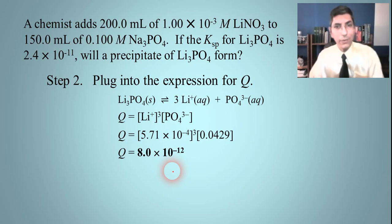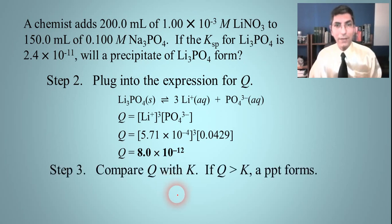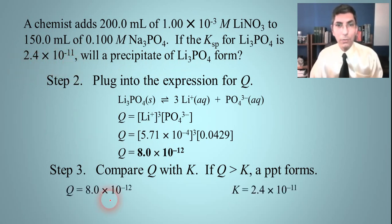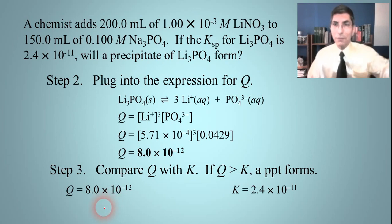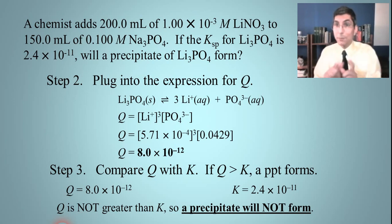Our last step is to compare Q versus K. Q is 8.0 times 10 to the negative 12th, and K is given as 2.4 times 10 to the negative 11th. Q is a little bit smaller than K. If Q is less than K, no precipitate will form. This is how you can take two solutions, mix them together, and predict ahead of time whether you're going to make a precipitate or not.